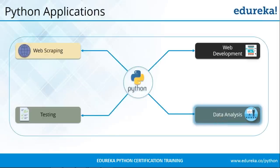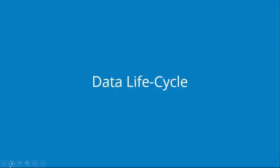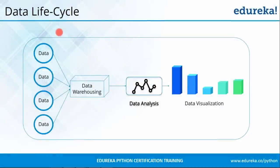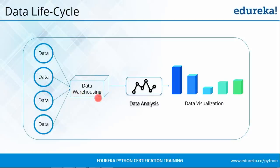Let us move forward and see what exactly is the data lifecycle. Data is stored in different formats — we have CSV files, Excel files, or HTML files. What you do is convert or transform that data into a single format and store it somewhere — that's where data warehousing comes into picture. Once you have stored your data, you can perform certain analysis: predictive modeling, joining, merging data. Once the analysis is done, you can plot it in the form of a graph, and that stage is called data visualization.